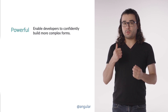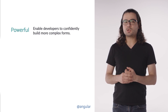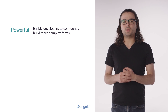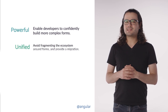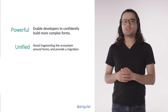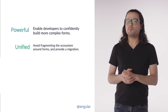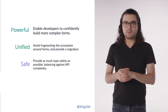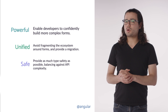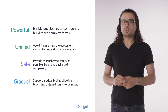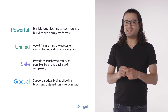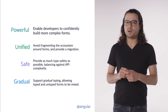When designing typed forms, we tried to follow some north stars — four guiding principles. First, we want the types to be powerful: you should be able to confidently modify even the most complex forms, no matter how deeply nested your form groups or form controls are. Second, we don't want to completely replace forms; we want one unified ecosystem that we move forward together. Third, we want forms to be as safe as possible — no more surprising any's in your types when you access values or controls. And fourth, you should be able to gradually migrate at your own pace, even if you have a lot of existing forms code.